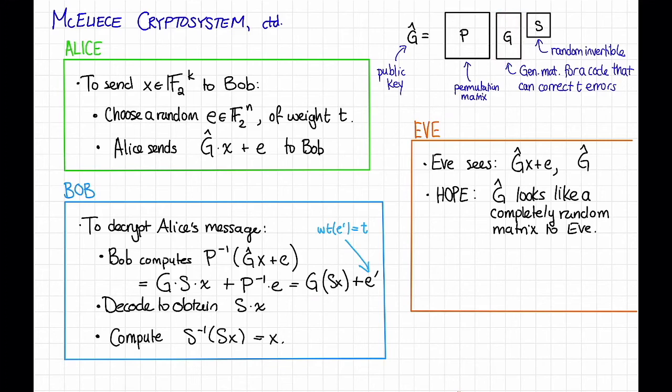So we permuted the rows. That's what P is doing. And then we scrambled up the column space by multiplying by a random invertible matrix, S. And the hope is that this scrambling, along with an appropriate choice of the original matrix G, is going to make it difficult for Eve to tell the difference, at least computationally efficiently, between G hat and a completely random generator matrix.